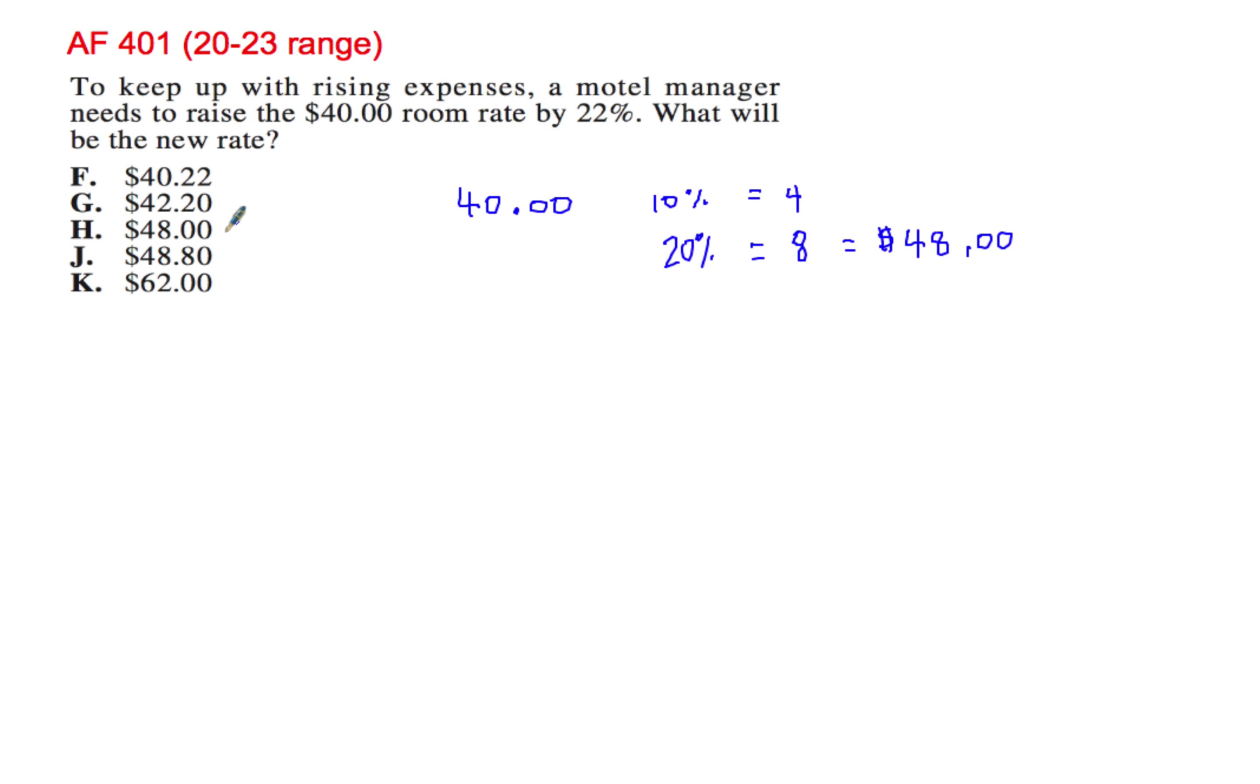So by default, let's look at these answer choices. It can't be H because that is 20%. G and F are lower than 20%, so it can't be those two numbers. And the only one close to $48 is $48.80. $62 is a little too high. So just by doing that in your head, if you're good with percentages, it's going to be letter J.